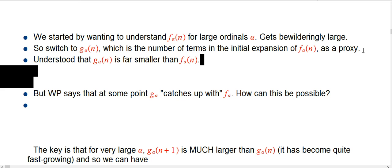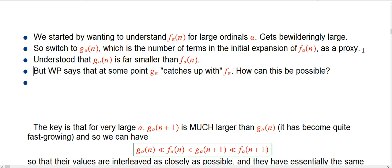But here's something that you'll find on Wikipedia about the slow-growing and fast-growing hierarchies. They say, interestingly enough, that at some point the g_α, the slow-growing hierarchy, catches up with f_α. How can that even be possible, when g_α is slow-growing? And in all the instances that we've seen, g_α is really much, much smaller than f_α.